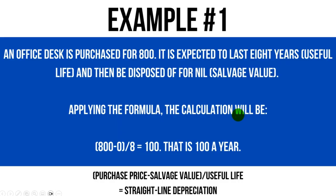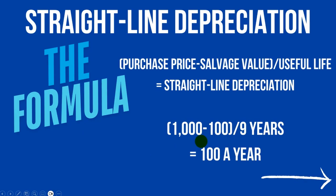Let's look at some more examples. Example one: an office desk is purchased for eight hundred. It is expected to last eight years — that's the useful life — and then be disposed of for nil, that's the salvage value. Applying the formula: eight hundred minus zero is eight hundred, divided by eight years, gives us one hundred. So that's one hundred a year — the same amount as before, even though the purchase price and number of years were different.